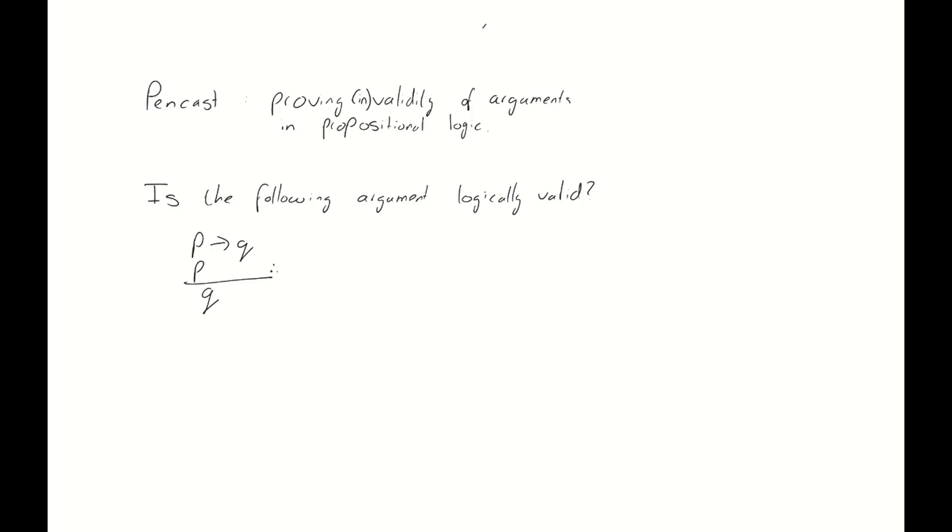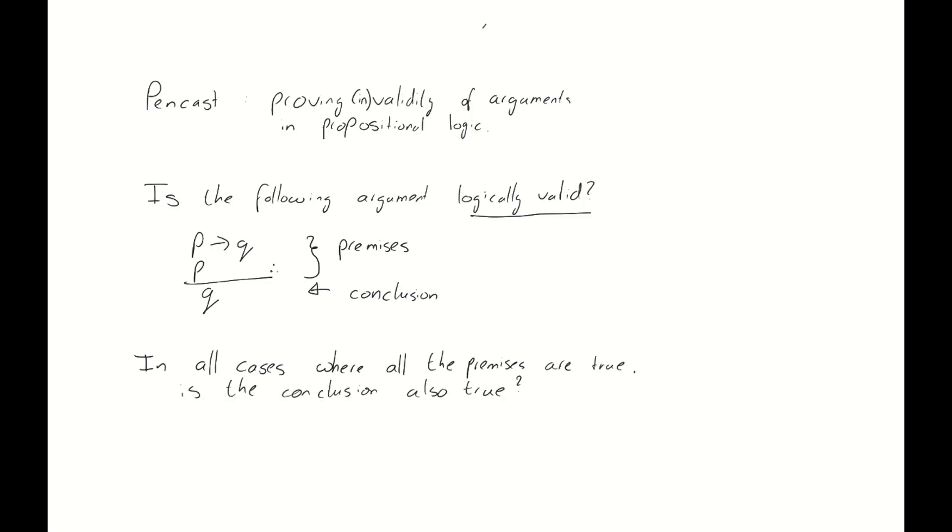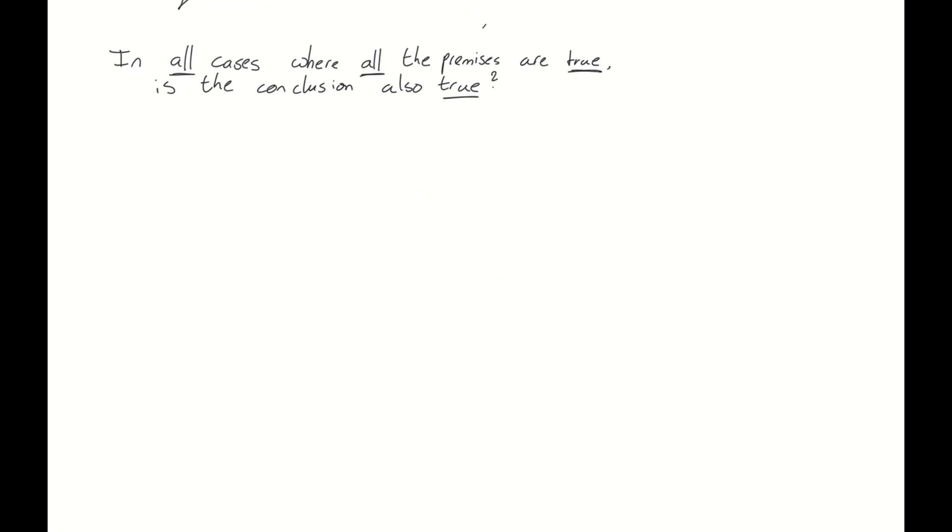Well, in an argument we always have, or usually have, a set of premises. In this case, we have two, P implies Q and P, and we have a conclusion. And the question we ask ourselves is, in all cases where all the premises are true, is the conclusion also true? Now, let's take a look at how we can figure that out.